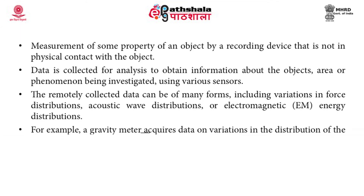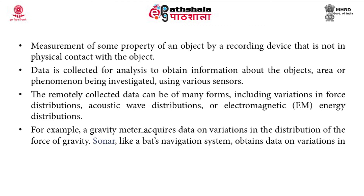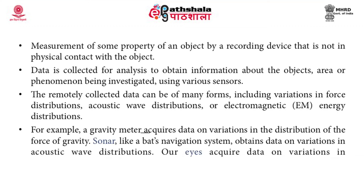The remotely collected data can be of many forms, including variations in force distributions, acoustic wave distributions, or electromagnetic energy distributions. For example, a gravity meter acquires data on variations in the distribution of the force of gravity. Sonar — sound navigation and ranging, like a bat's navigation system — obtains data on variations in acoustic wave distributions. Our eyes acquire data on variations in electromagnetic energy distributions.